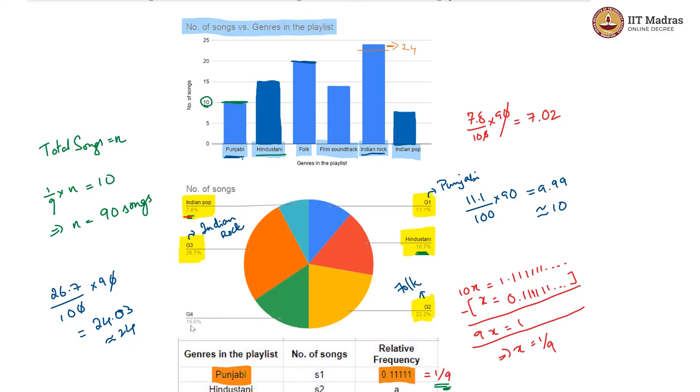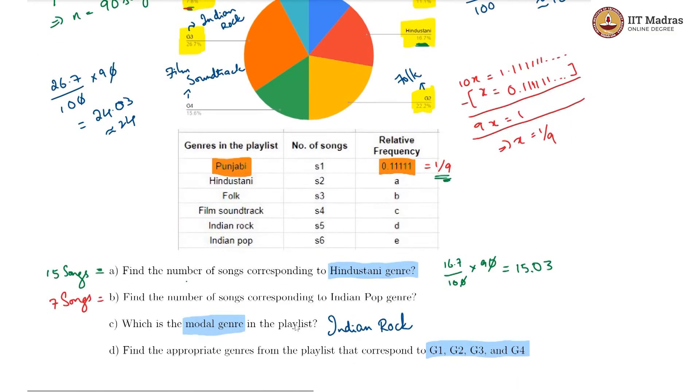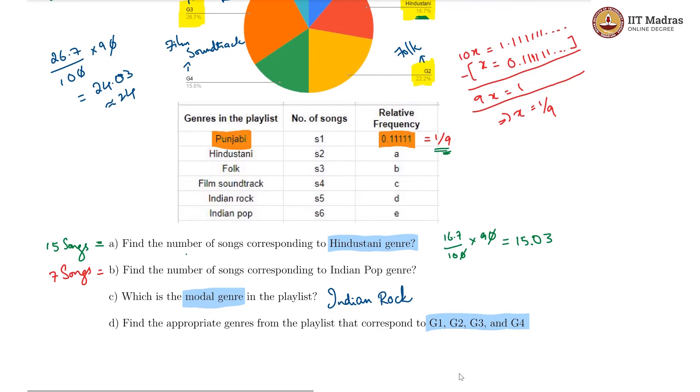And lastly, G4 is whatever is left and what is left here, everything else is done, Indian pop is done, Punjabi is done, Hindustani is done, Indian rock is done, folk is also done. So G4 definitely has to be film soundtrack. So G1 was Punjabi, G2 was folk, G3 is Indian rock. And lastly, G4 is film soundtrack.